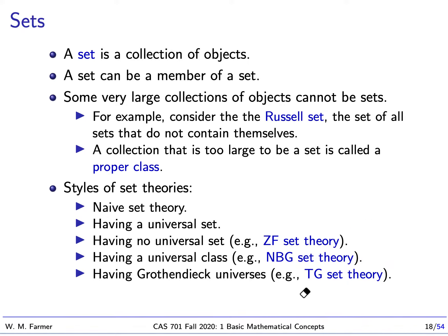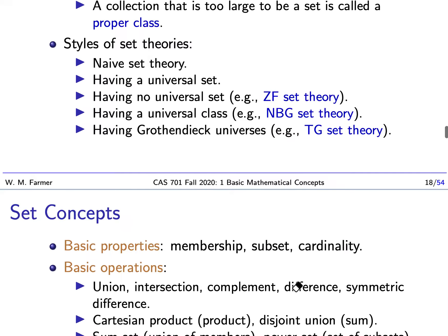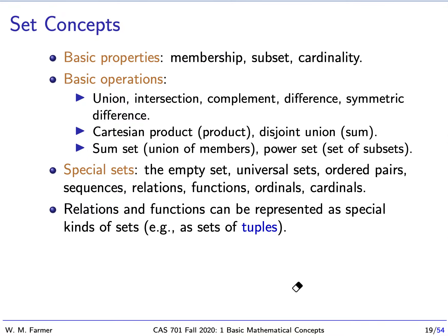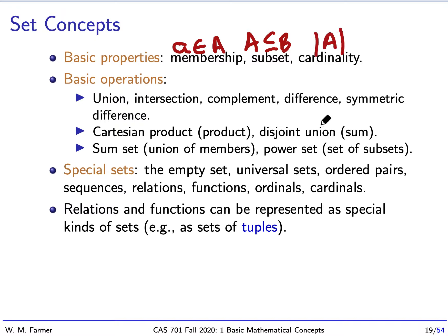That's a quick overview of what sets are. There are lots of different set concepts. We have membership: little a is a member of set big A. We have the subset relation: all members of A are members of B. We have cardinality, a way of assigning a size to a set. We have basic operations like union, intersection, complement, difference, and symmetric difference.